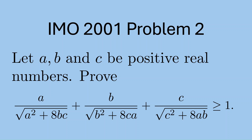Let a, b, and c be positive real numbers. Prove that a divided by the square root of a squared plus 8bc, plus b over the square root of b squared plus 8ca, plus c over the square root of c squared plus 8ab is greater than or equal to 1. I have done several similar IMO inequalities in my previous videos using the AM-GM inequality, but this is so far the hardest one.